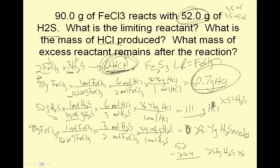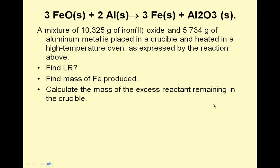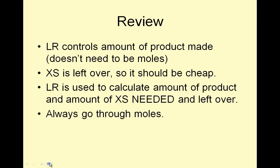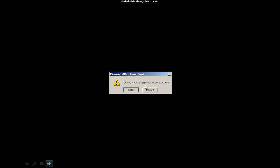I think I have another example that I'm just going to skip over. I think we've done enough. Review. Limiting reactant controls the amount of product made. You should know that right away. Excess is left over, so it should be cheap. Limiting reactant is used to calculate the amount of product and amount of excess needed. Always go through moles. Take it to the limit one more time. And perhaps most importantly, bye-bye.